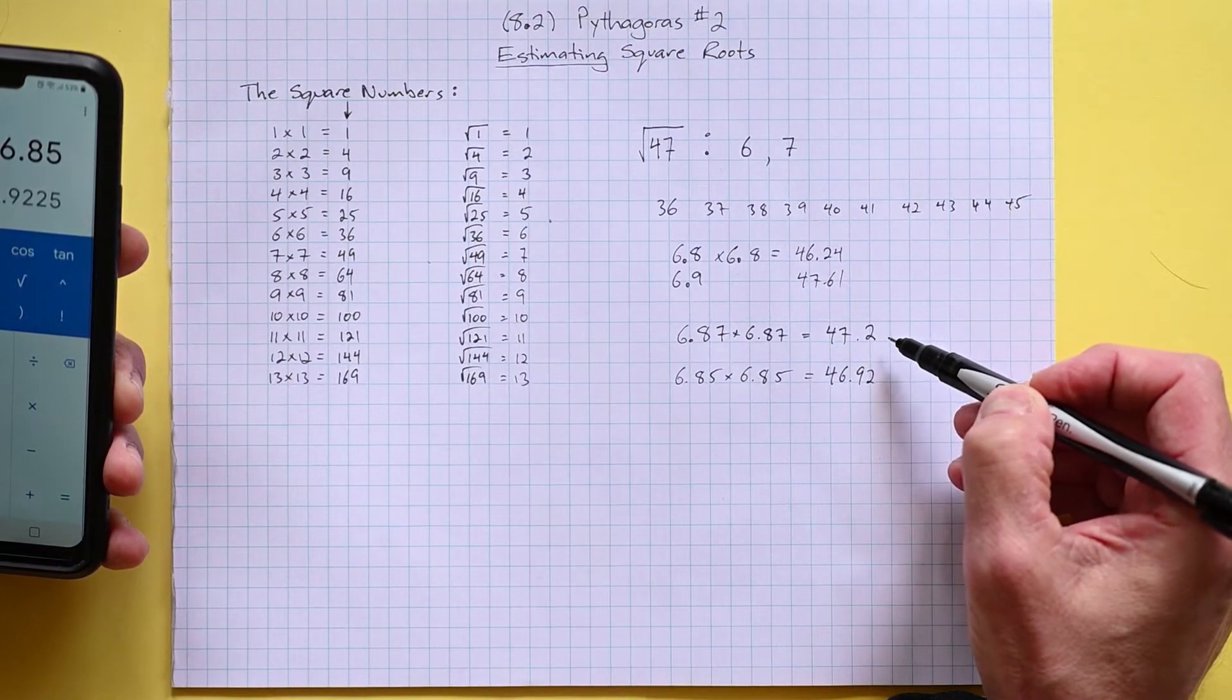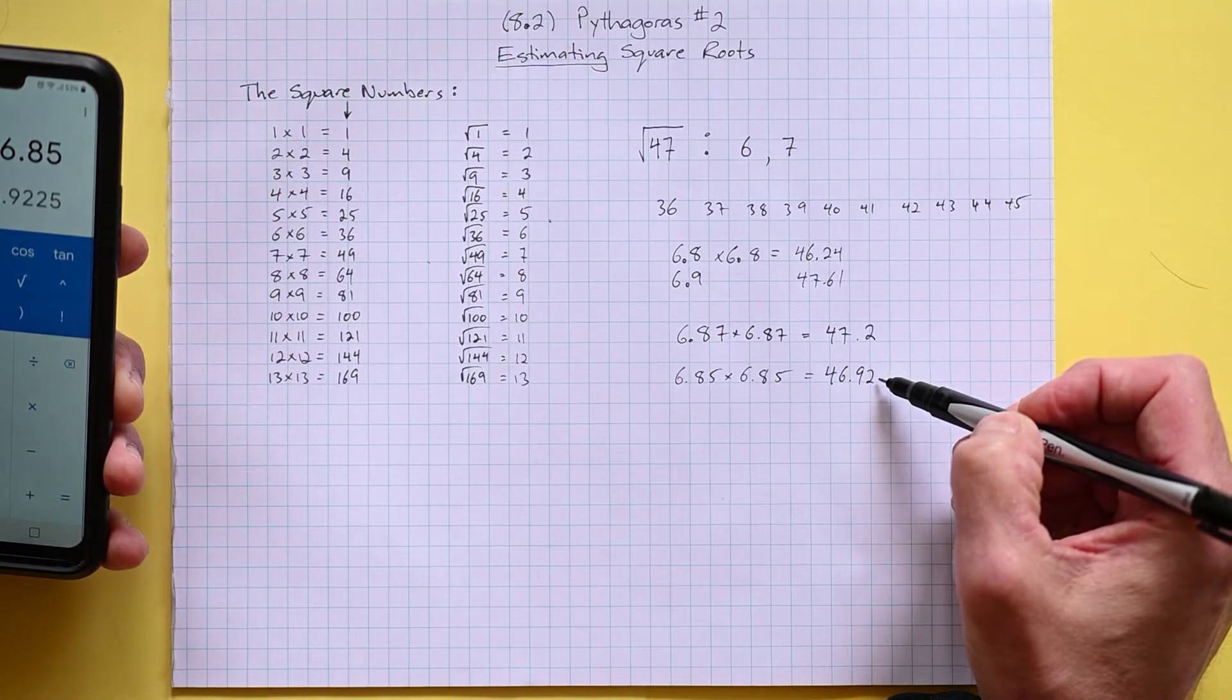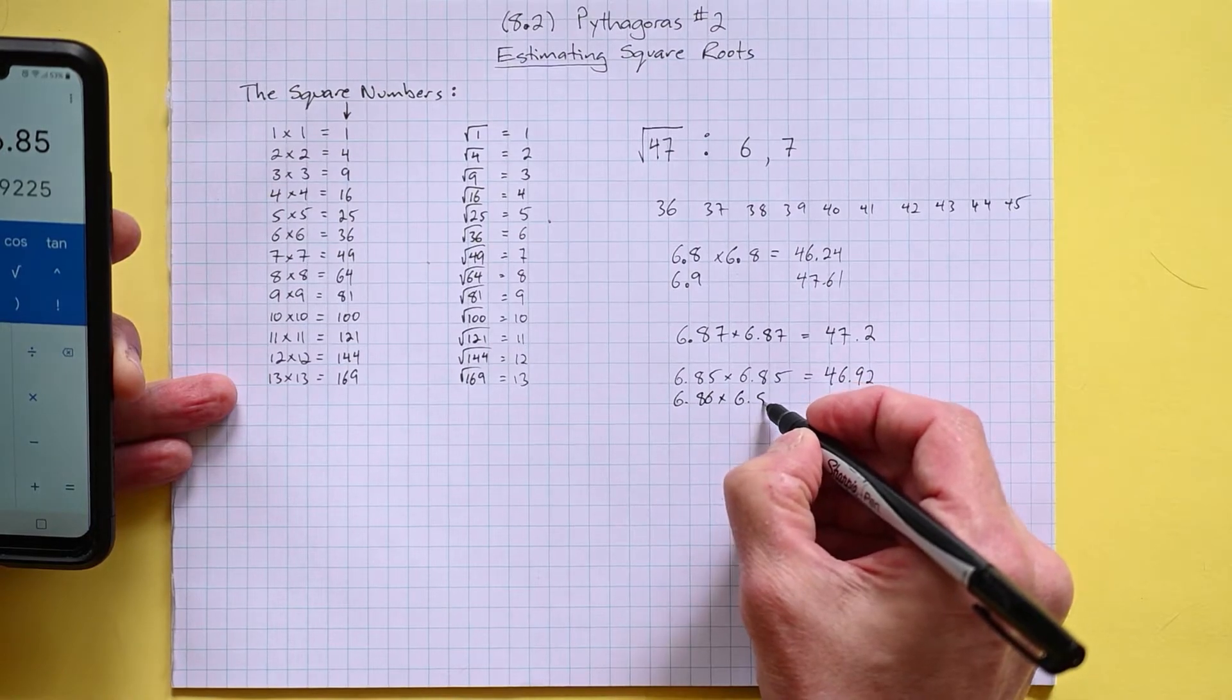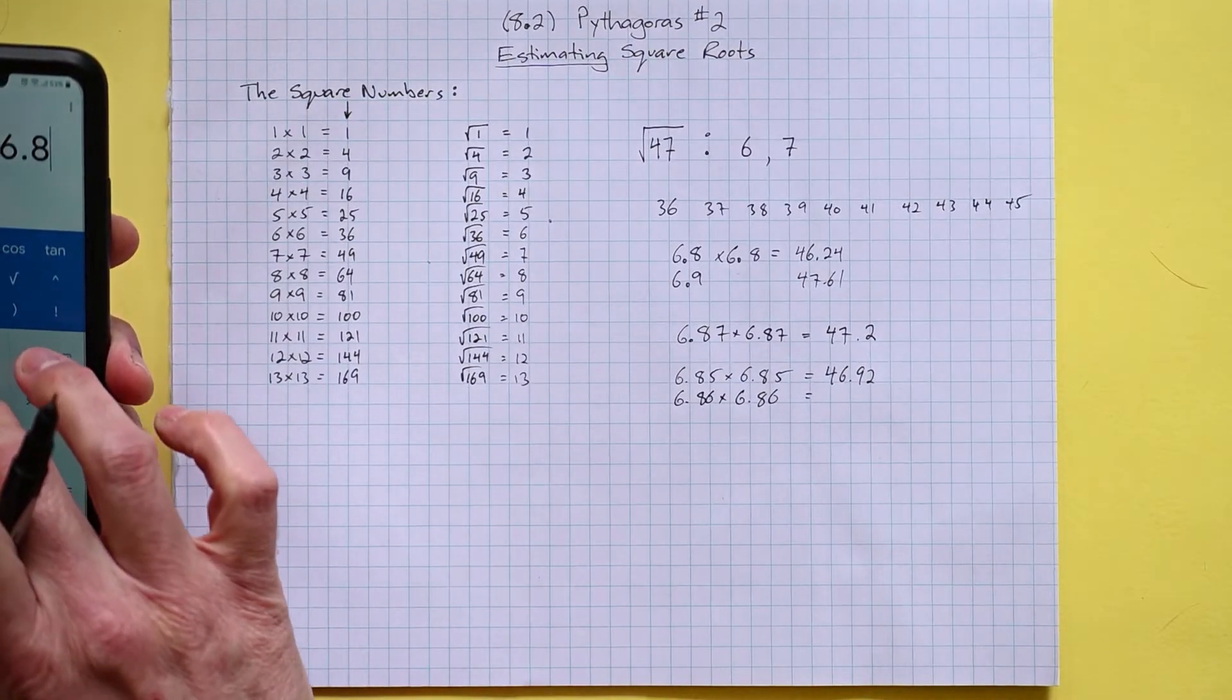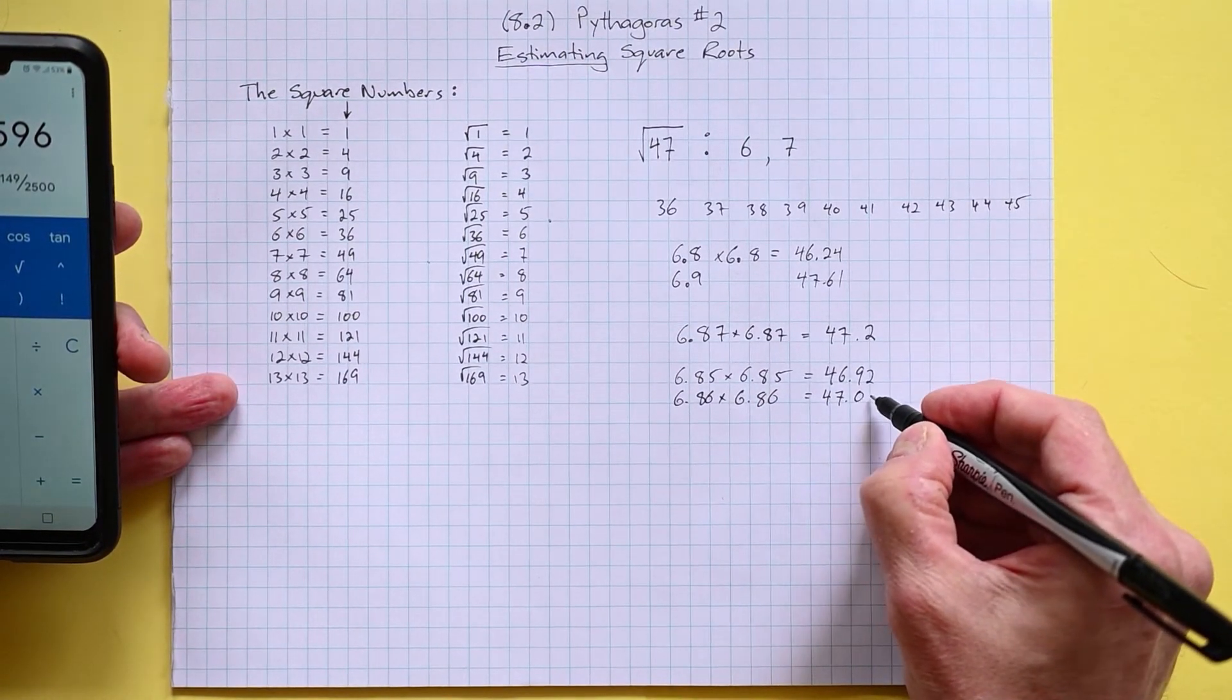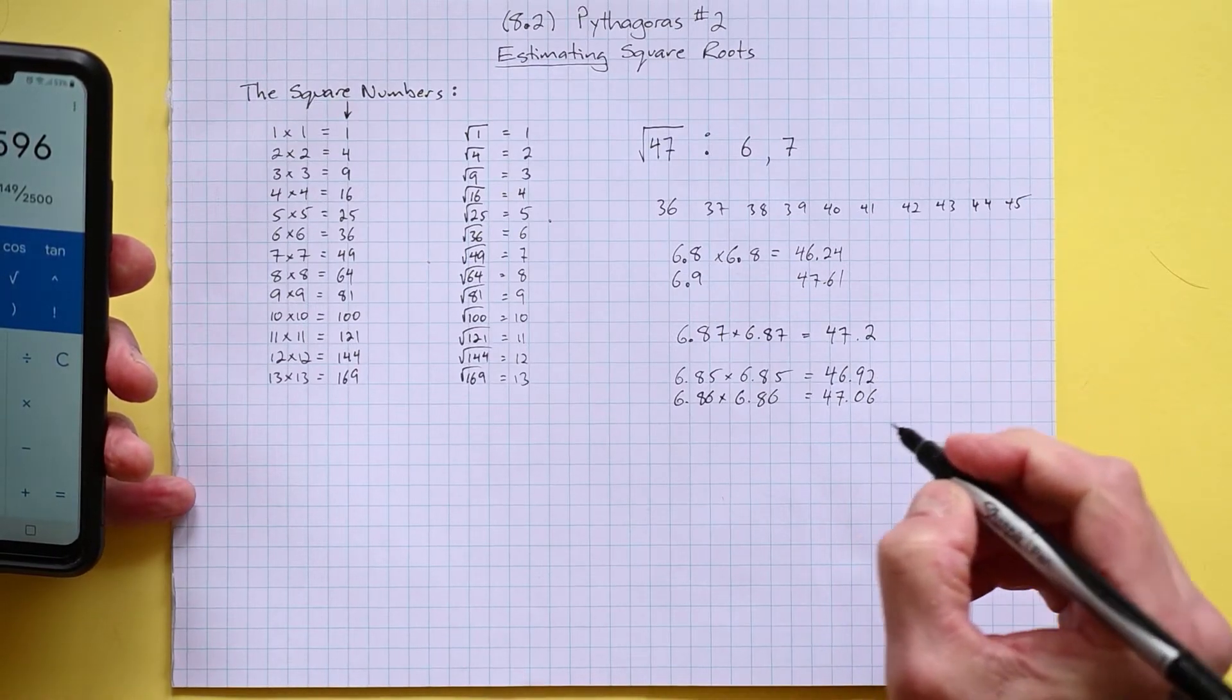This one is a full 0.2 away from our answer, so this one's clearly much closer. We actually need to get this slightly higher to get a bit closer. So if we go just a slight bit higher here, let's see what we get. My guess is we're going to end up a little bit too big now, but we'll try it. 6.86 times 6.86 equals 47.06. So this is 0.06 away, this is 0.08 away. This is our closest yet.